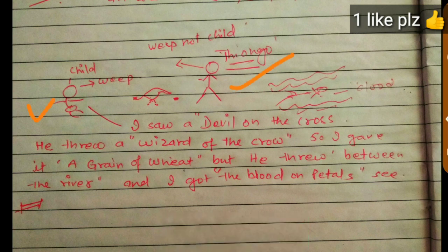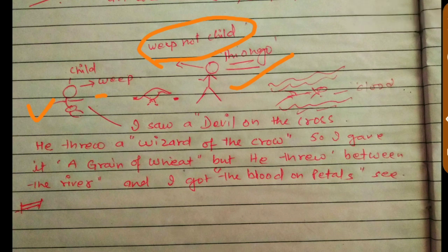He is Thiong'o, the writer. He looks at a child who is weeping, and he is telling him 'weep not child.' He asks him why are you weeping, so the child tells a short story.